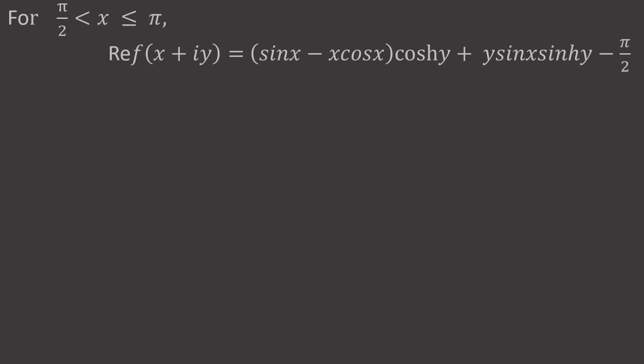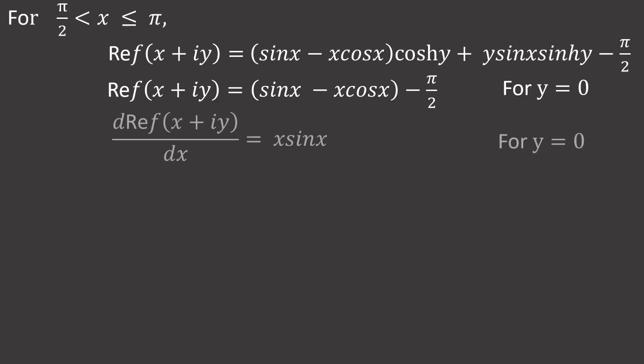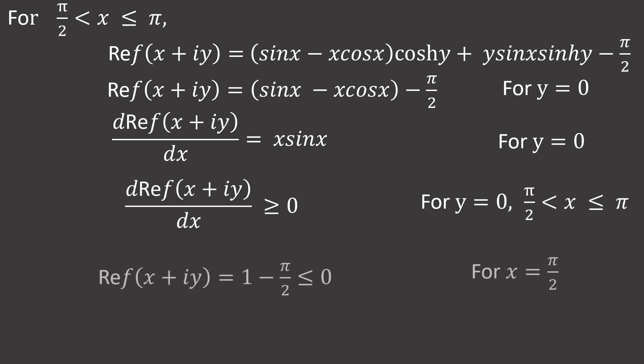We can also show that the real part is 0 at a unique point when y = 0, and it has a unique point in the sense that the derivative of the real part of f(z) with respect to x is positive for y = 0 in the range x > π/2 and x < π. It increases from x = π/2, it being negative, and then it increases to the positive. Please ignore the greater than or equal to, it's supposed to be less than and also greater than when x = π/2 and x = π respectively.